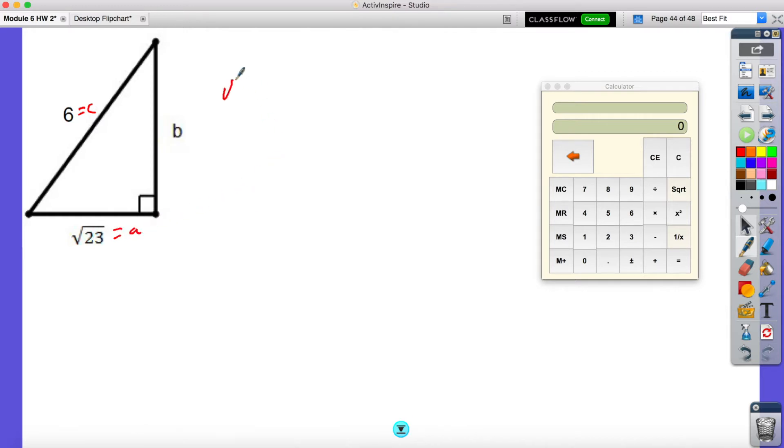So what this is going to look like is radical 23 squared plus B squared equals 6 squared. Now I got this equation by just plugging it into A squared plus B squared equals C squared. So now look at this. Radical 23 to the second power is just 23 plus B squared is equal to 36.